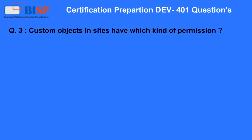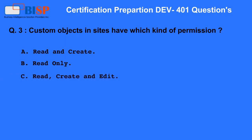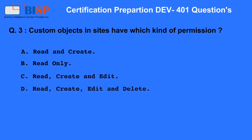Question 3. Custom objects and sites have which kind of permission? A. Read and create. B. Read only. C. Read, create and edit. D. Read, create, edit and delete.